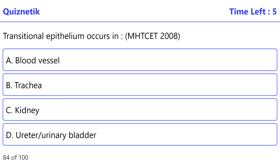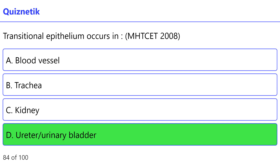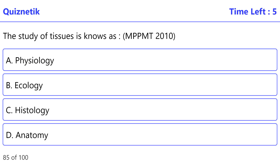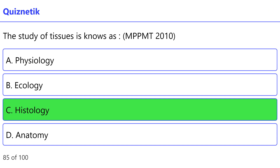Transitional epithelium occurs in — MHT CET 2008 — correct option is D: ureter/urinary bladder. Study of tissues is known as — MPPMT 2010 — correct option is C: histology.